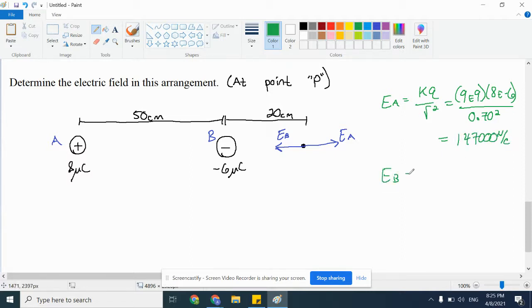As for field B, KQ over R squared, again, 9E9, 6E negative 6, and 0.20 squared. I get 1.35 million newtons per coulomb.